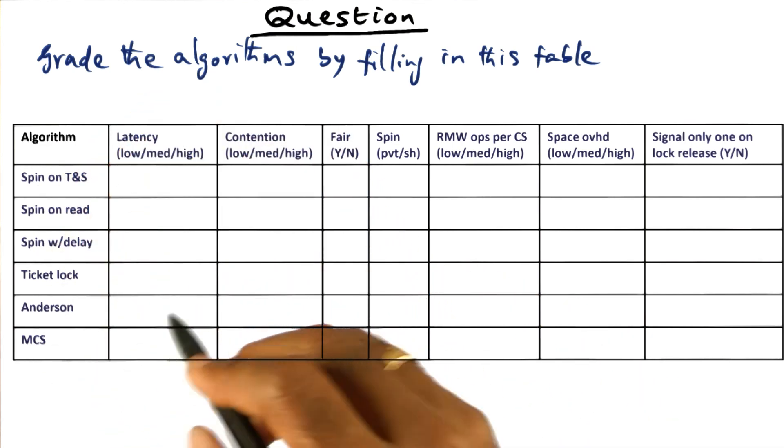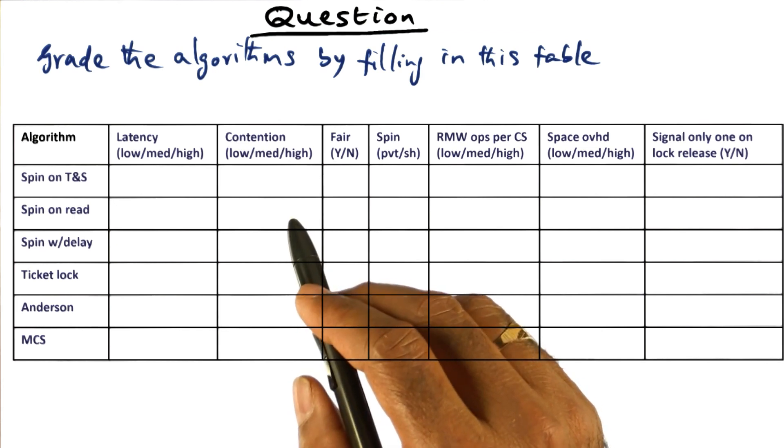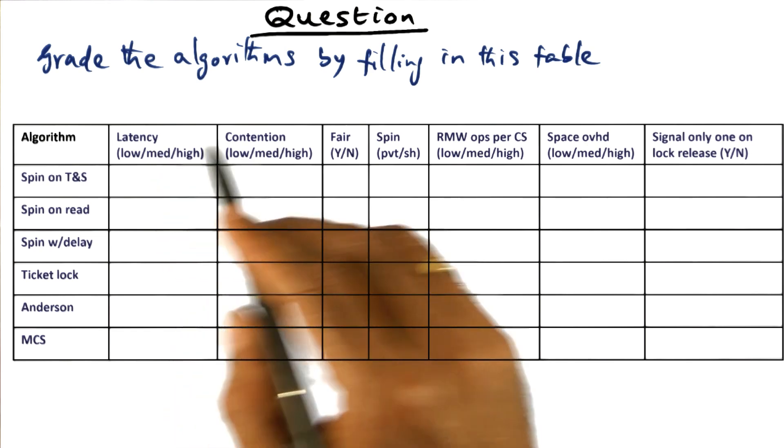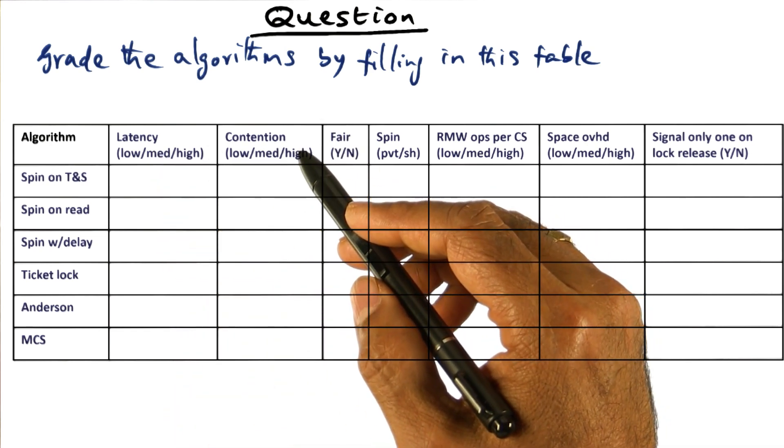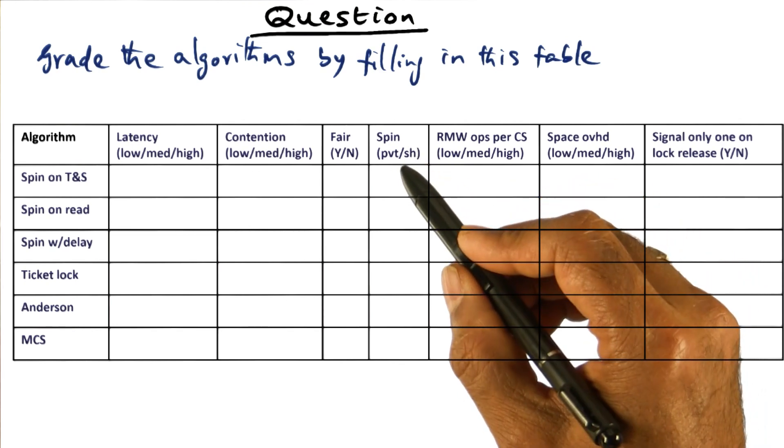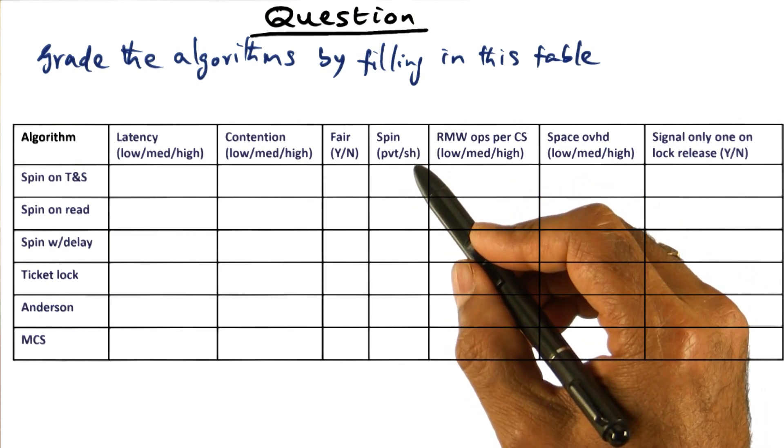And along the way, I mentioned some of the attributes that we look for: latency for getting the lock, contention when locks are released, fairness, and whether the spin is on a private variable or a shared variable.